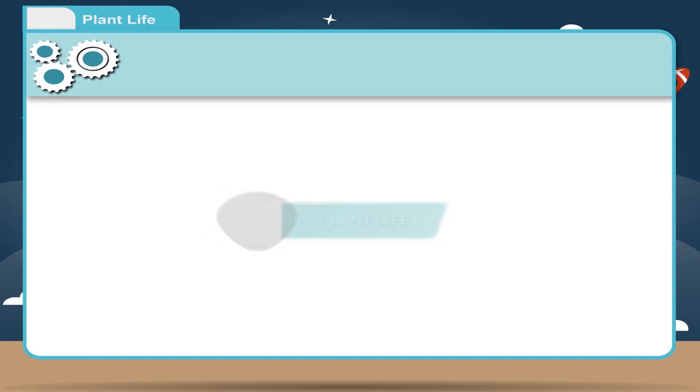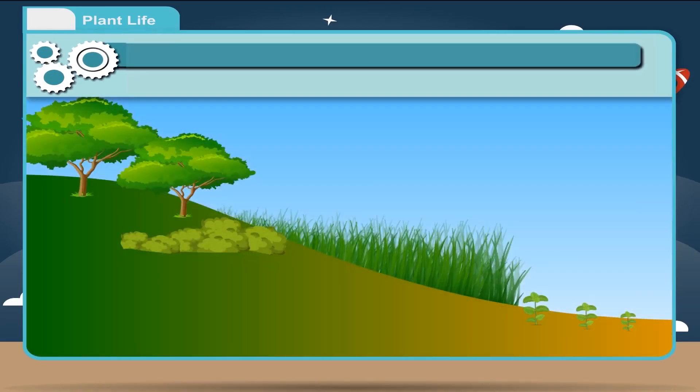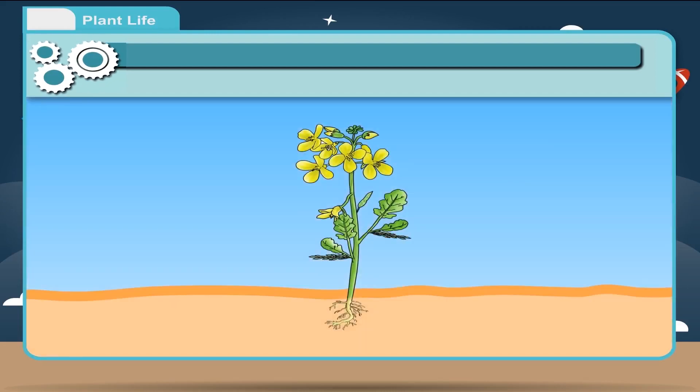Plant Life: In our surroundings, we have a number of plants and trees. They may differ in shape and size, but all the flowering plants have some common characteristics.